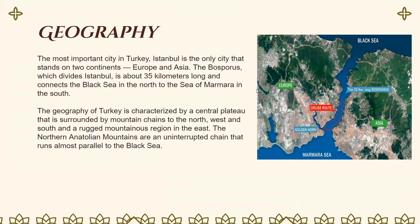As for geography, Istanbul is the most important city in Turkey and the only city that stands on two continents — Europe and Asia. The Bosphorus, which divides Istanbul, is about 35 kilometers long and connects the Black Sea in the north to the Sea of Marmara in the south. The geography of Turkey is characterized by a central plateau surrounded by mountain chains to the north, west, and south, and a rocky mountainous region in the east. The Northern Anatolian Mountains are an uninterrupted chain that runs almost parallel to the Black Sea.